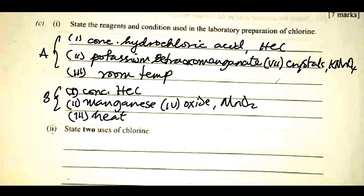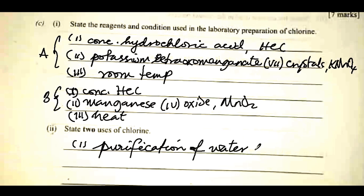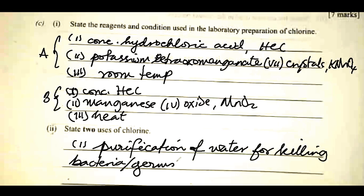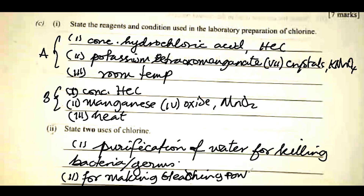State two uses of chlorine. First, purification of water — for killing bacteria or germs. Second, for making bleaching powder, or for making weed killer (NaClO₃).